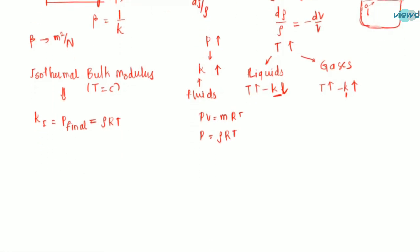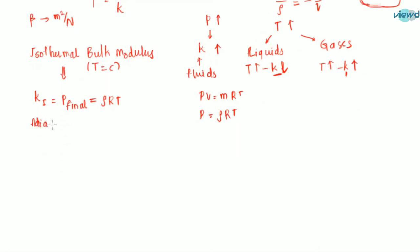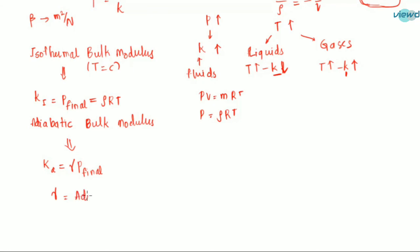There is also adiabatic bulk modulus, which applies when there is no heat transfer. The adiabatic bulk modulus KA is equal to gamma times the final pressure P. Here gamma is the adiabatic index, which is equal to Cp divided by Cv, where Cp is the specific heat at constant pressure and Cv is the specific heat at constant volume.